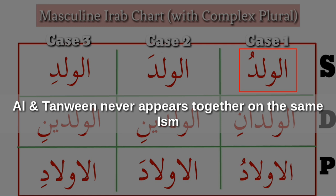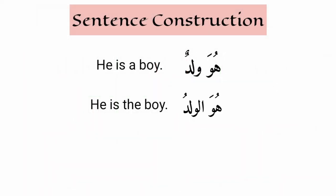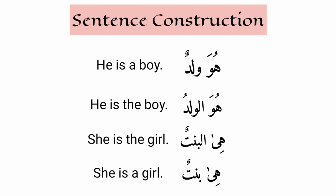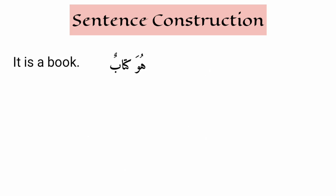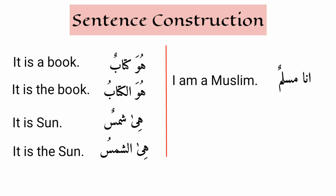The word al-walad: case one is al-waladu, case two is al-walada, case three is al-waladi. It was waladun, waladan, waladin — but with al, tanwin goes away. He is the boy — huwa al-waladu. She is the girl — hiya al-bintu. It is the book — huwa al-kitabu. It is the sun — hiya ash-shamsu. I am a Muslim — ana muslimun. I am the Muslim — ana al-muslimu.